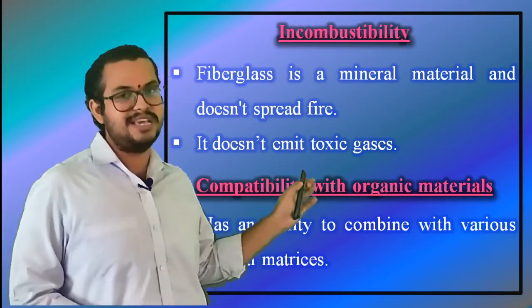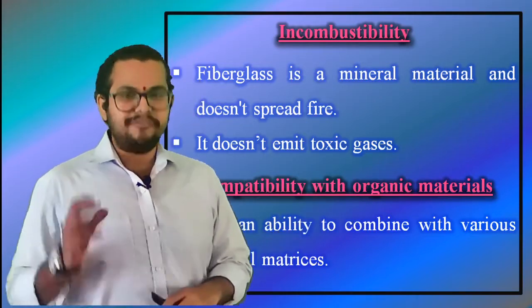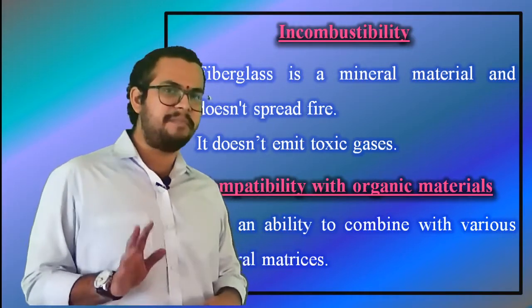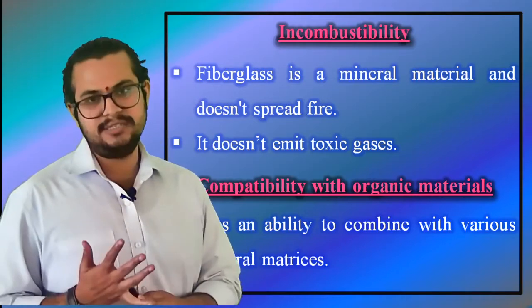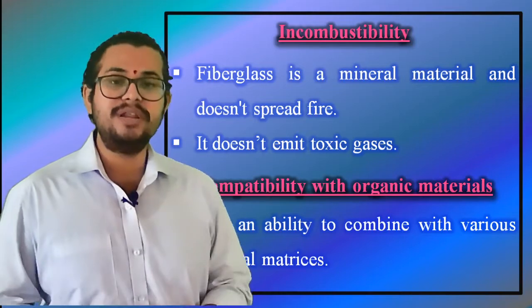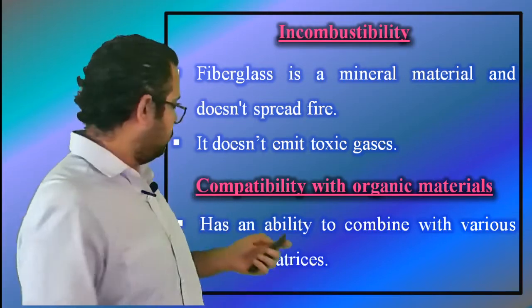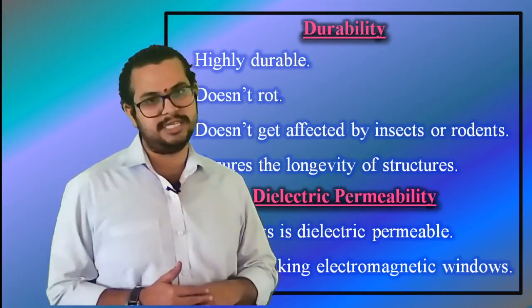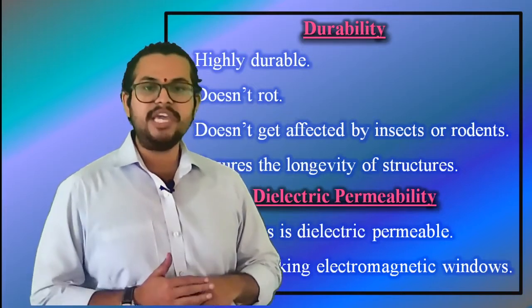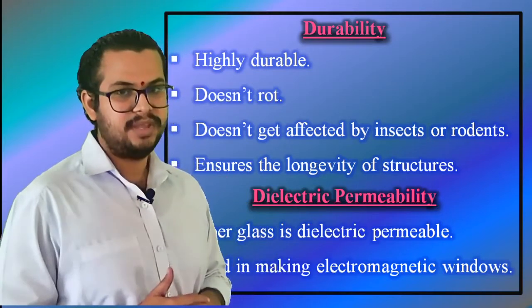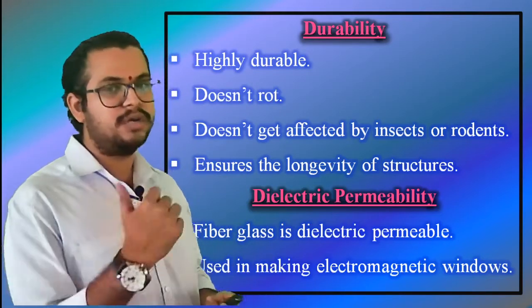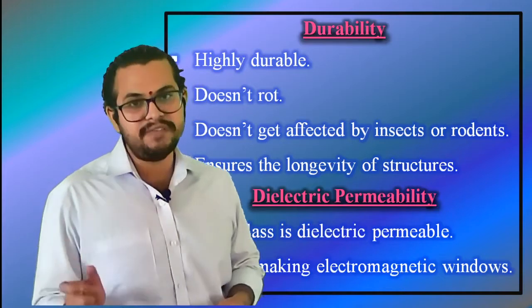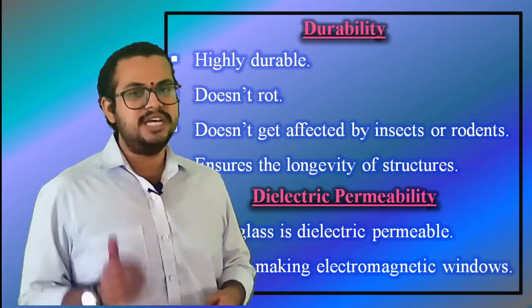Compatibility with organic materials: fiberglass is available in different sizes and has the ability to combine with a number of mineral matrices such as cement and also with numerous synthetic resins. Durability: fiberglass is a very durable material as it does not rot and is not affected by insects or rodents, ensuring the structural integrity and longevity of structures built using fiberglass.